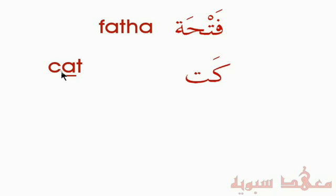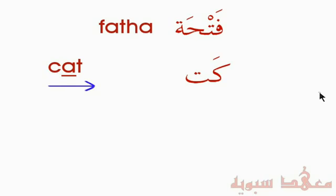I've transliterated 'Kat' into Arabic. We have the Kaf here, which makes the K sound. Then we have the Ta, which is equivalent to the T in English. So this says 'Kat.' Notice the vowel is on top, not after the letter, as in 'Kat.' And in English we write from left to right, while in Arabic we write from right to left. In Arabic, we read the first letter and what harakah it has first, then the second letter and what harakah it has, and so on.